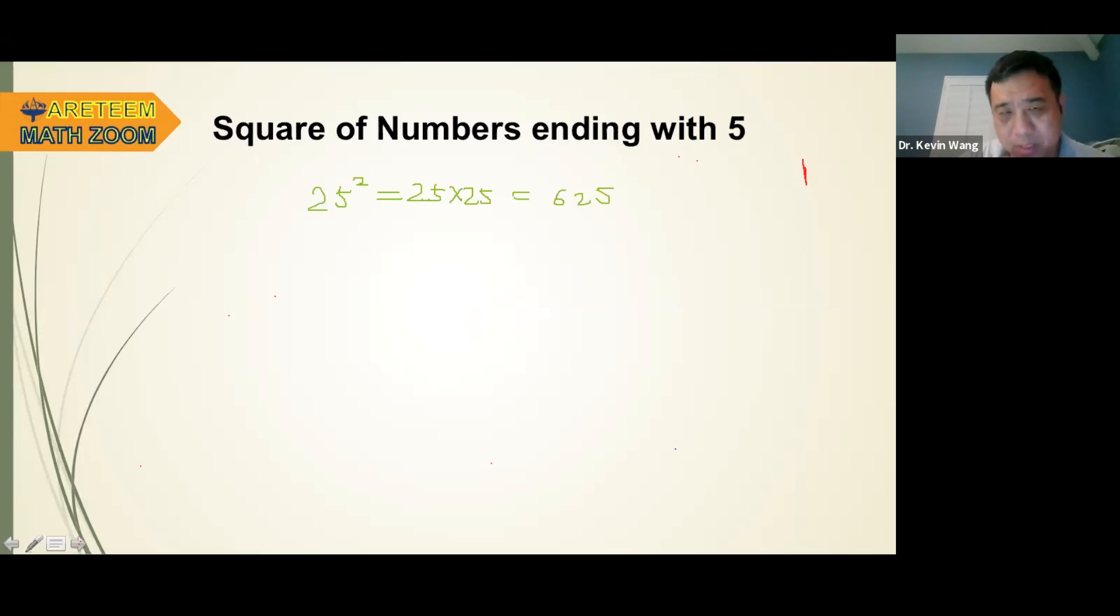So what I'm going to show you is a method to look at this number and get this without going through the normal calculation. For example, 25. So I look at this. This is a number ending with 5. So look at the number 2. The 2 is before the 5. So besides the 5, we have a 2 here. So now what I'm going to ask you to do is this: 2 multiplied by a number that's 1 bigger than 2, so that's a 3. It's 6. And once you write a 6, attach a 25 at the end. That's your answer.